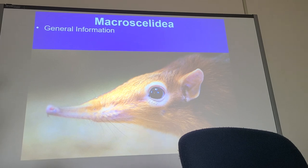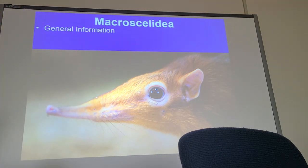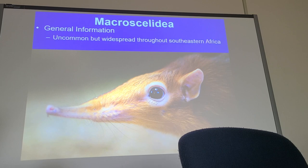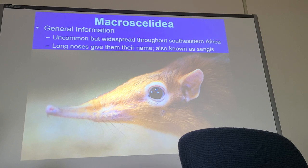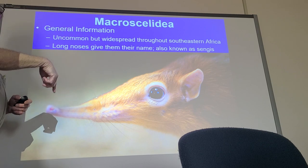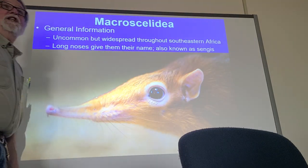The next order — also Afrotropical but completely different — is Macroscelididae, known as the elephant shrews. Of course, they're not shrews and not elephants. They're found throughout southeastern Africa — think the Horn of Africa: Ethiopia, Eritrea, Somalia. They have a strong olfactory sense, good smell like many mammals, and these long, very flexible noses — that's what gives them the name elephant shrews. They're more properly known as sengis.